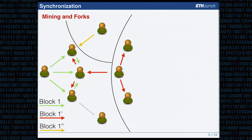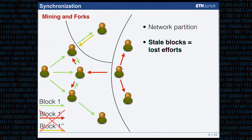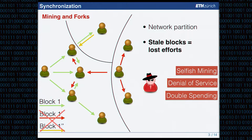Only one out of these three blocks can eventually make it into the blockchain — only one can be in the main chain. The two other blocks that remain stale represent lost efforts of the honest network. The drawback of lost efforts is that an adversary will not have these synchronization issues, giving them an easier game in selfish mining and double spending if the stale block rate is high.